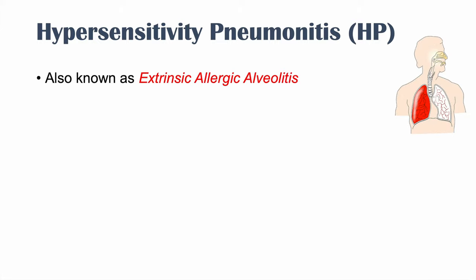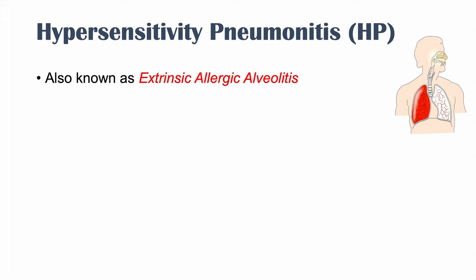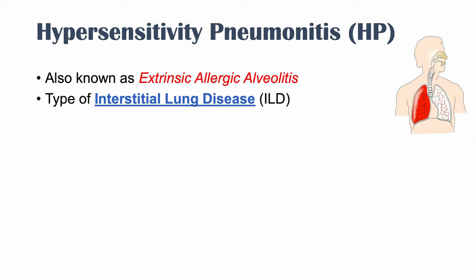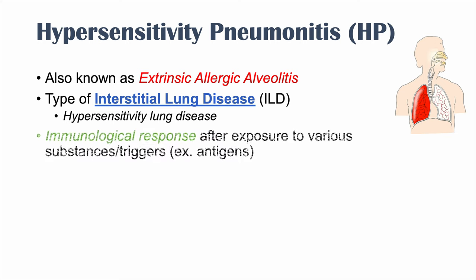Hypersensitivity pneumonitis is also known as extrinsic allergic alveolitis. It is a type of interstitial lung disease or ILD. You can think of it as a hypersensitivity lung disease — a hypersensitization to particular exposures. This condition is caused by an immunological response after exposure to a variety of different antigens, which we'll talk about later in this lesson.